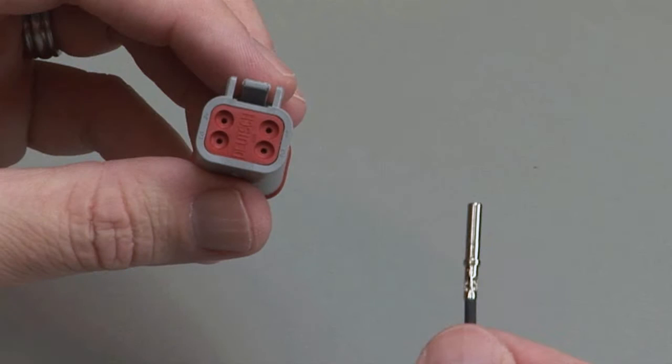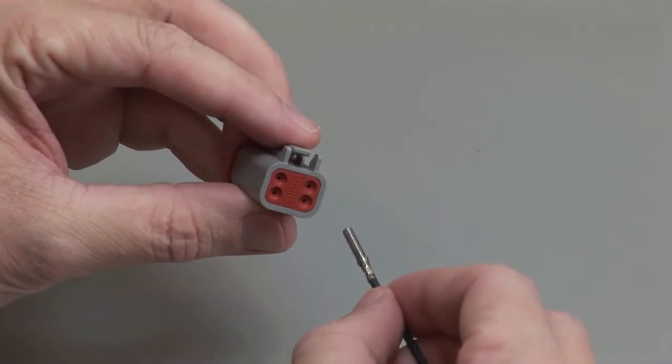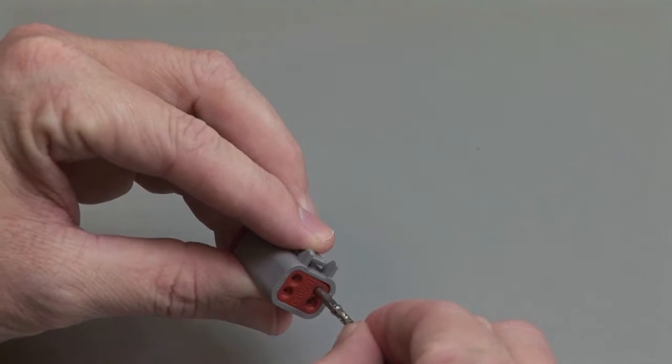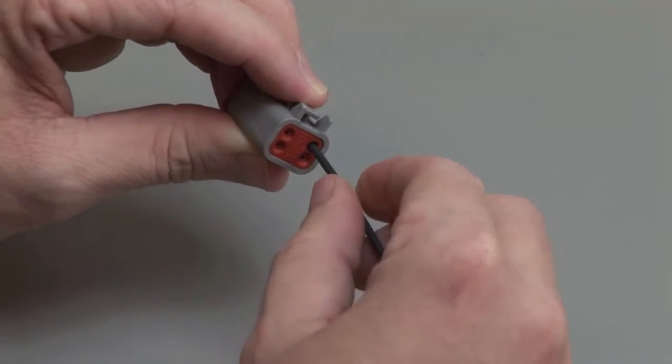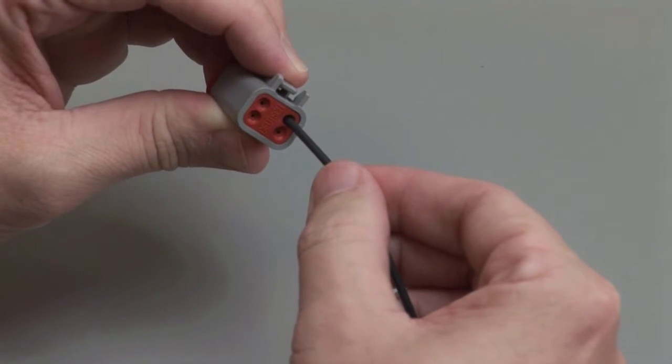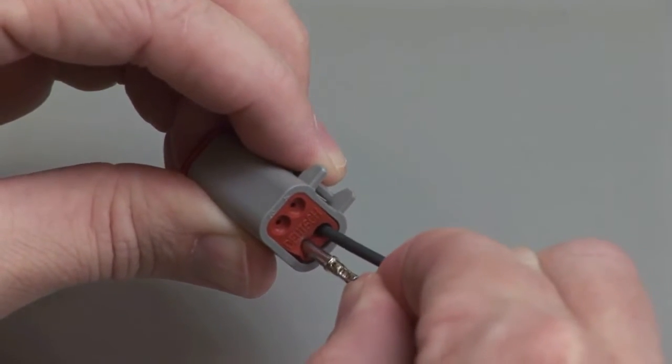Grasp the crimped contact approximately 1 inch behind the contact barrel. Hold the connector with the rear grommet facing you. Push the contact straight into the rear grommet until you hear and feel a click. A slight tug will confirm that the contact is properly locked into place. Repeat this process until all of the cavities are filled.